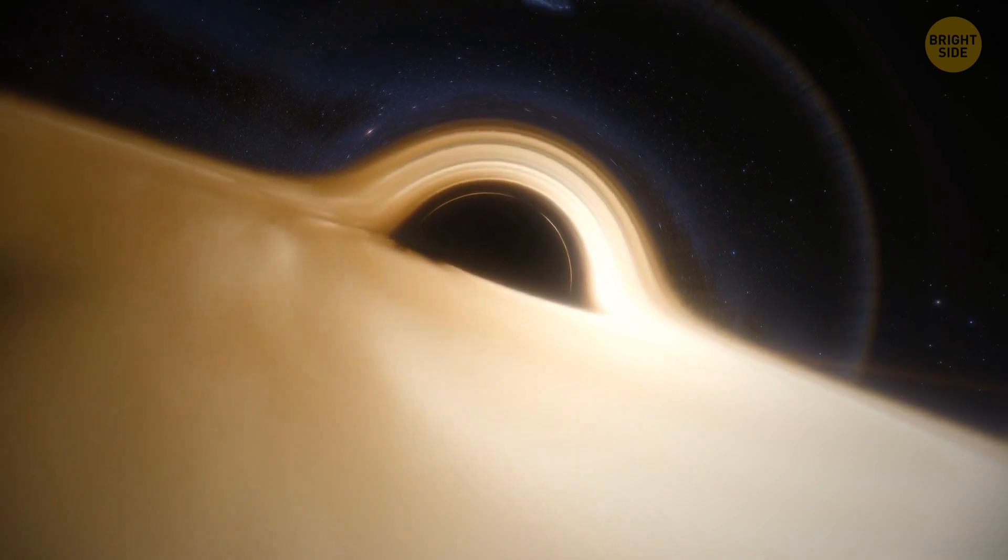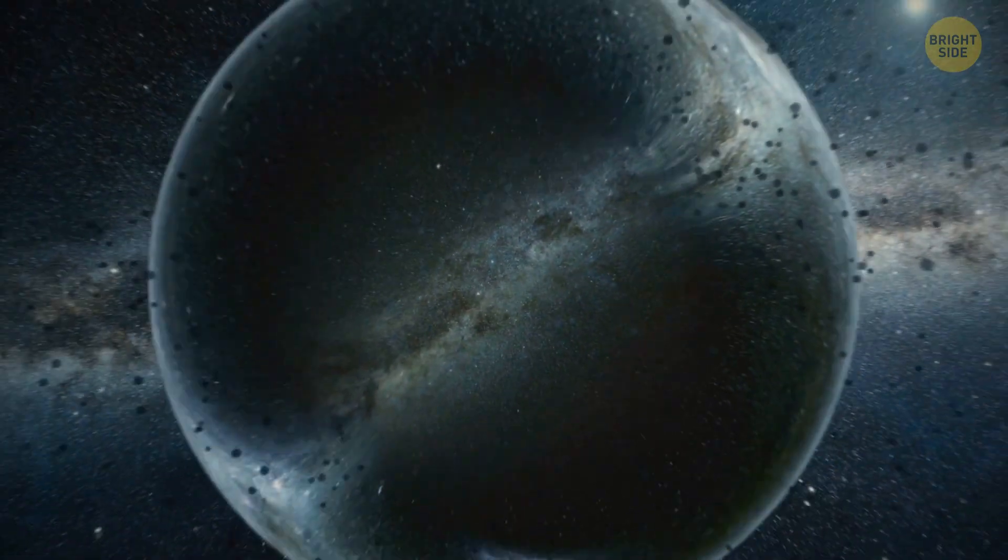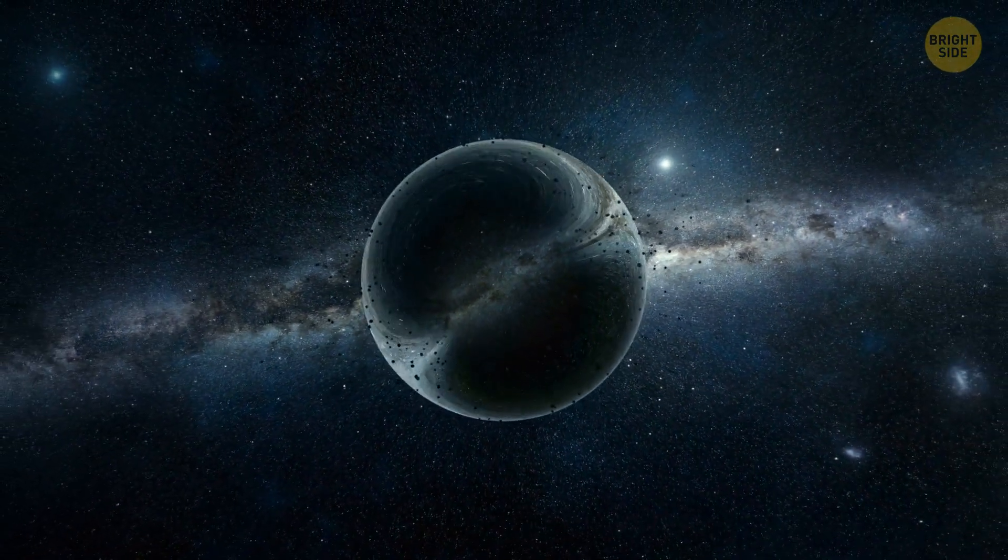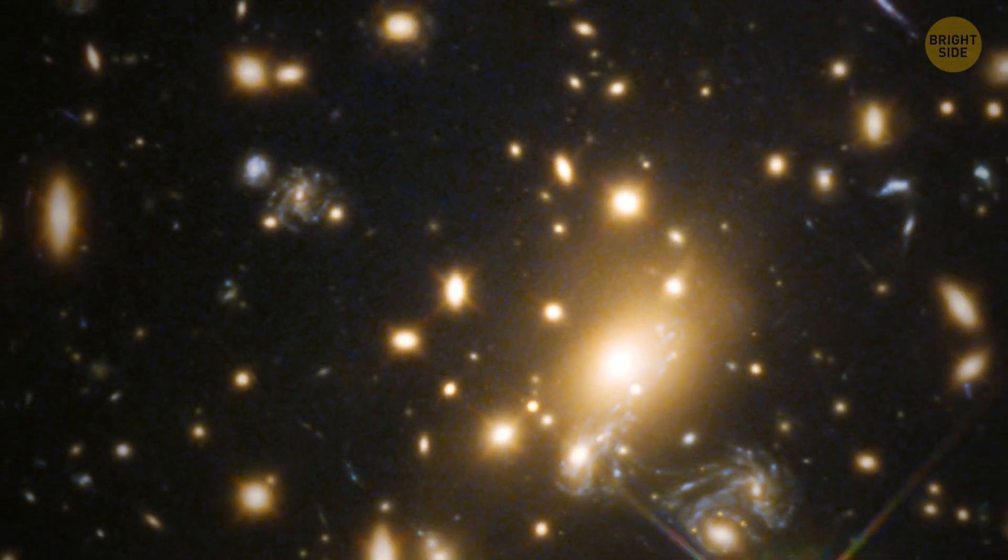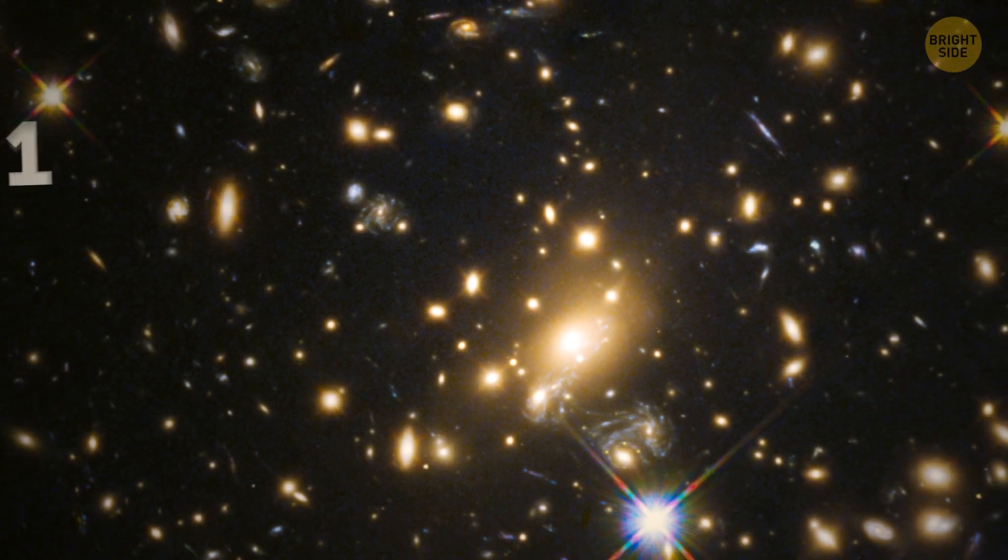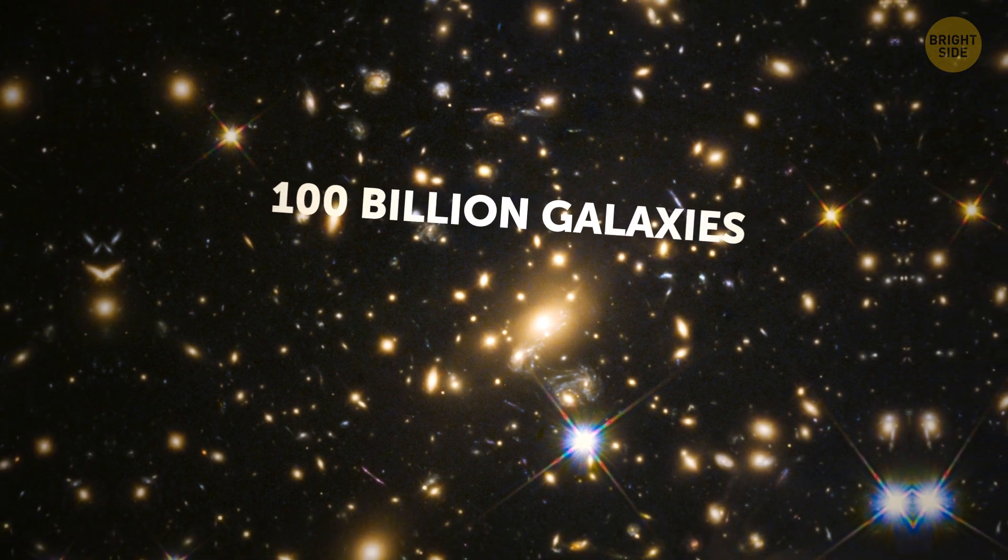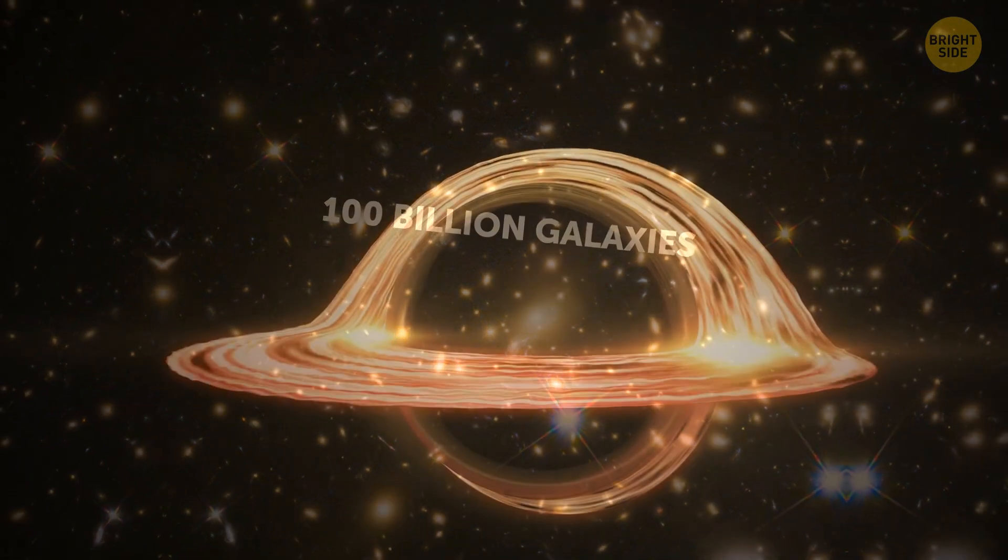Besides Sagittarius A star, there are 100 million medium-sized black holes in our galaxy. And can you imagine how many black holes in total there are in all 100 billion galaxies that exist out there? Nah, you do the math.